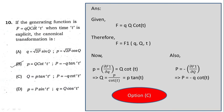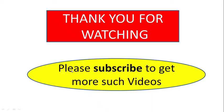Question 10: generating function F = qQ cot(t). Since F is a function of q, Q, and t, we use: p = ∂F/∂q = Q cot(t), giving Q = p/cot(t) = p tan(t). And P = −∂F/∂Q = −q cot(t). Option C is correct. Thank you for watching; please subscribe to our channel for more videos.